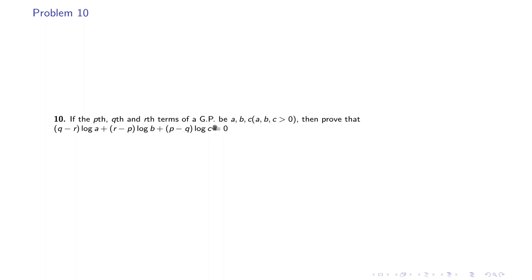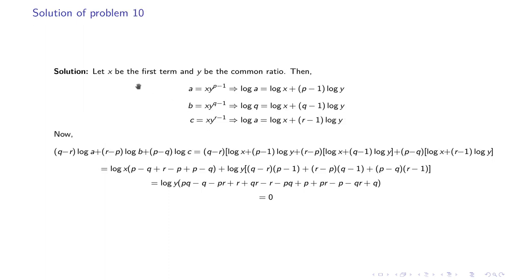Problem 10: if the pth, qth, and rth terms of a GP are a, b, c respectively (all greater than zero), prove that (q - r)·log a + (r - p)·log b + (p - q)·log c = 0. Assume first term x and common ratio y. Then log a = log x + (p-1)·log y, log b = log x + (q-1)·log y, log c = log x + (r-1)·log y. Substituting and simplifying gives the result zero.